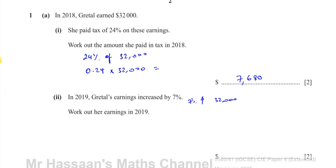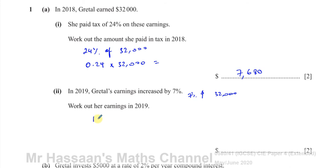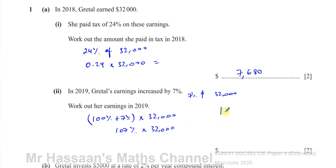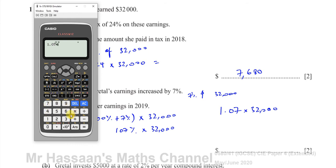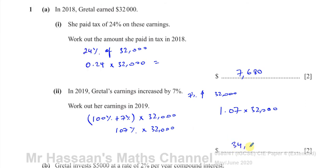You can do this in a couple of ways. One way is to say this is 100% plus 7% of $32,000. That gives us 107%, which is 1.07 times $32,000 — that's 107% as a decimal, dividing by 100. So 1.07 times $32,000 gives us $34,240.